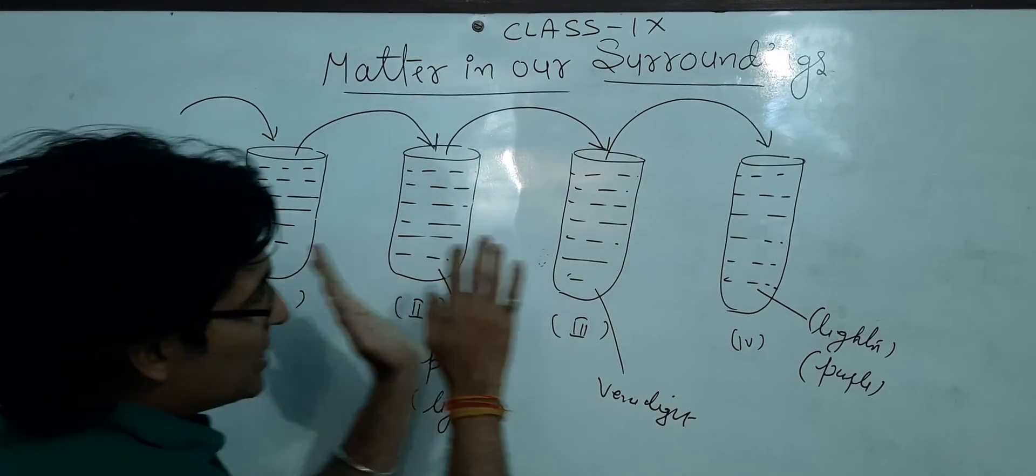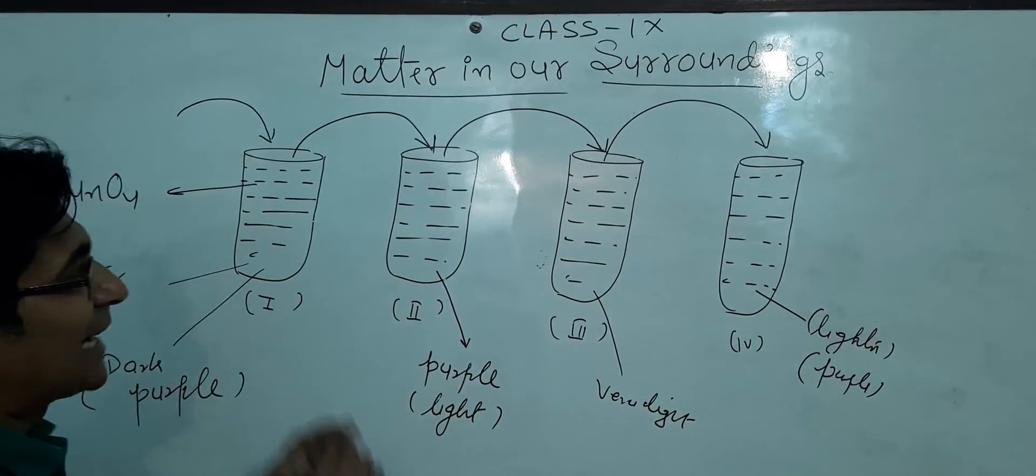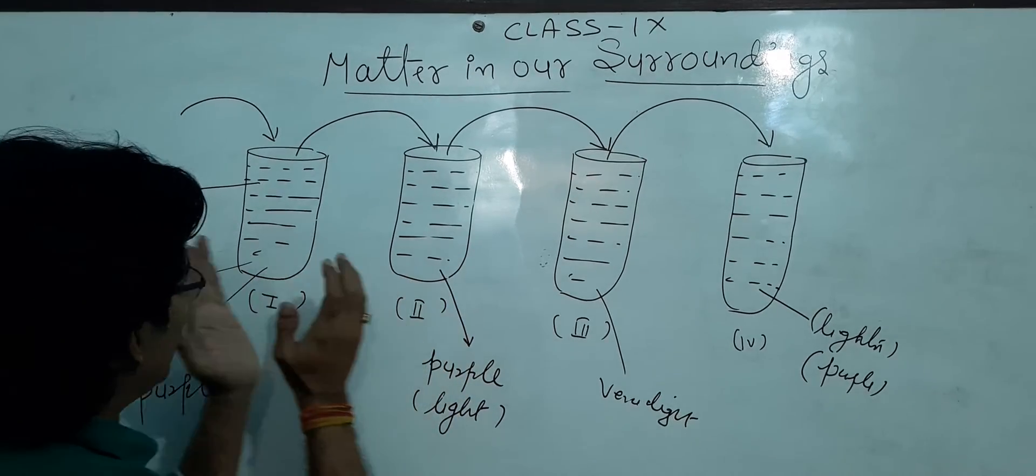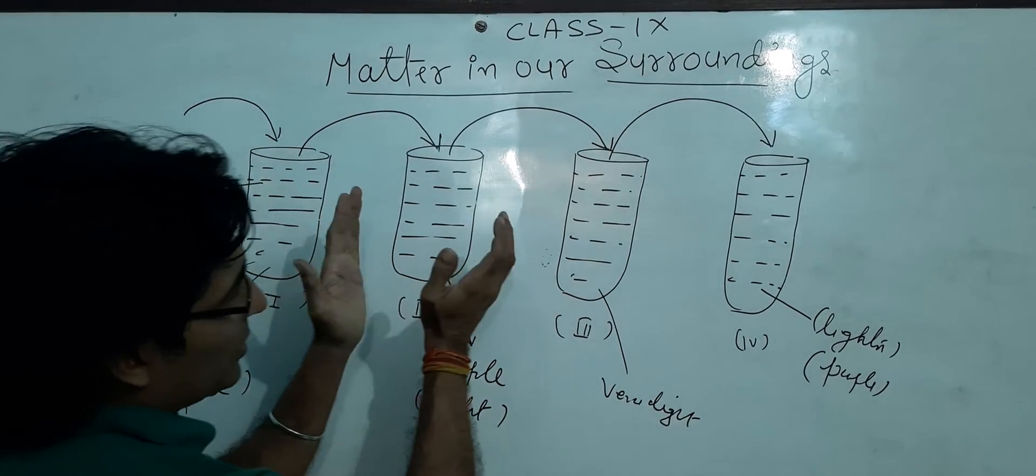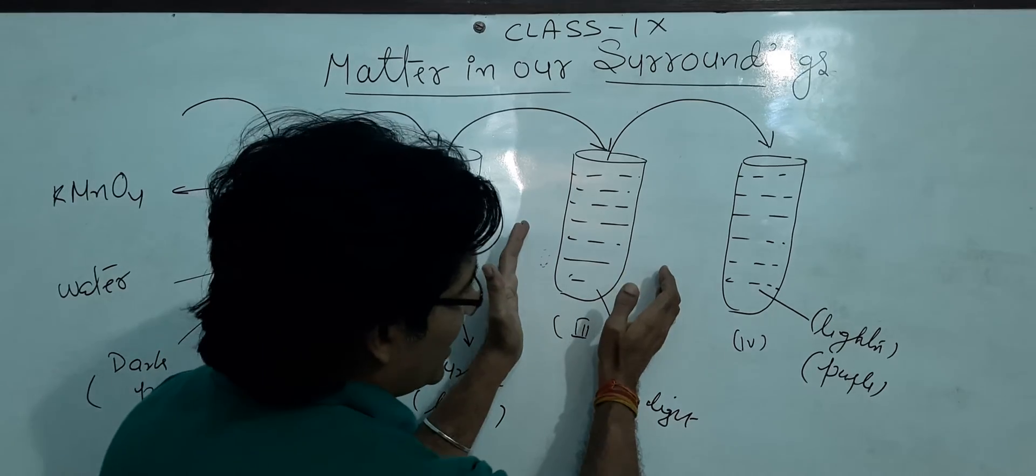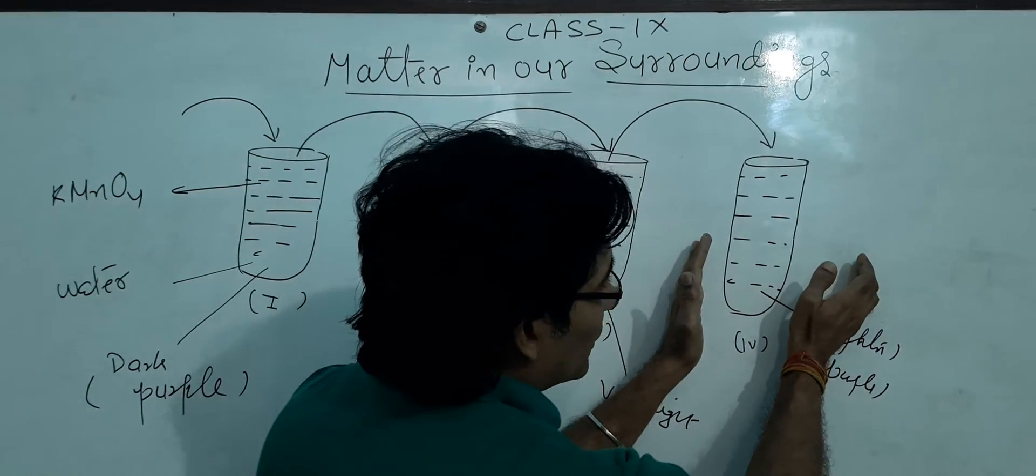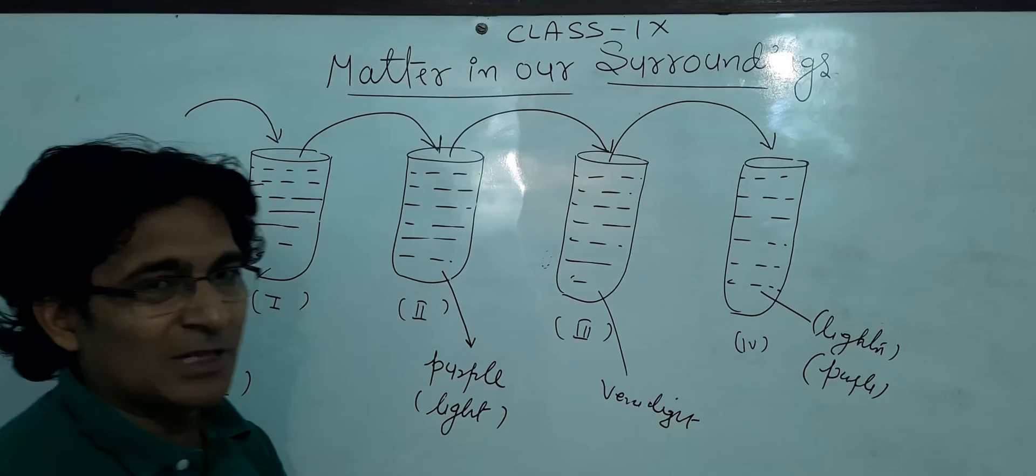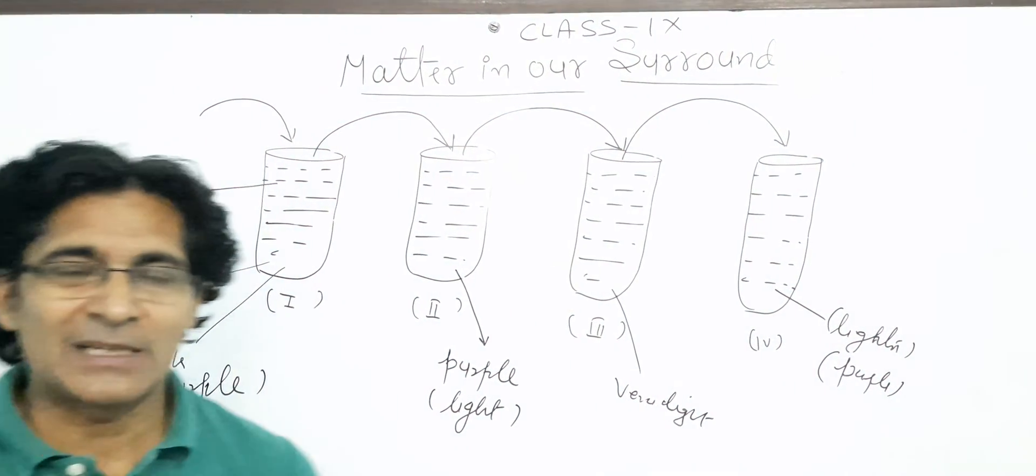This activity shows that the atoms are so tiny, so small, that from test tube number one they are reaching up to test tube number four. Even the color change shows us that the atoms are present in test tube number one, then into the two, then into three, and then into four. So this activity shows us how tiny are the particles.